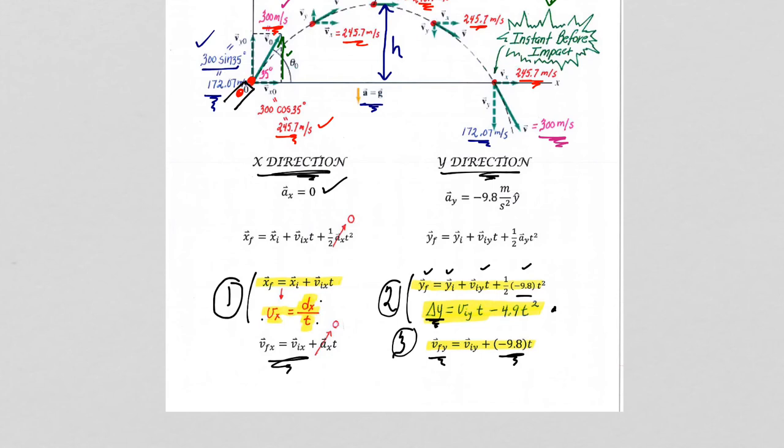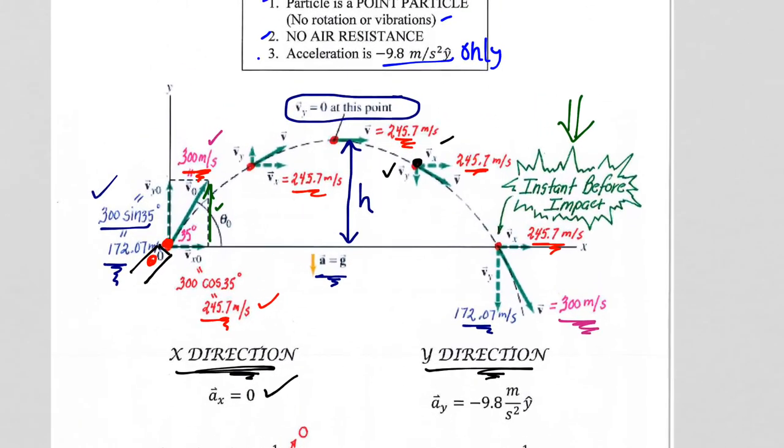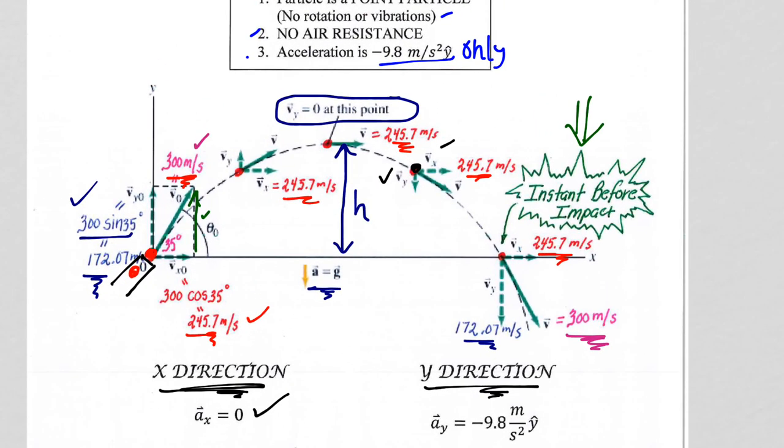Not all projectile motion has to have a delta y of zero. So oftentimes, they'll pick an intermediate spot, for example, like right here, to calculate what is going on. So if I can calculate the final velocity in the y direction, the velocity in the x direction never changes, I would do a tip-to-tail vector addition to get the actual speed.